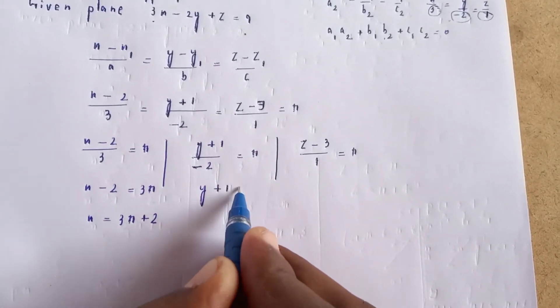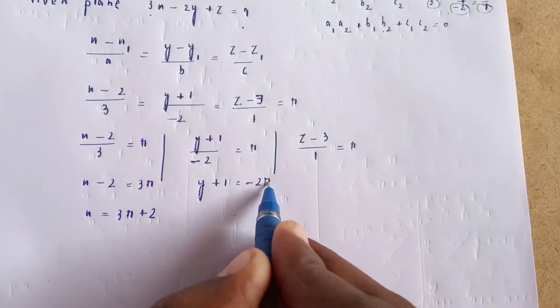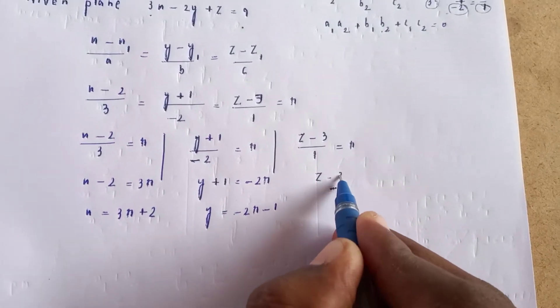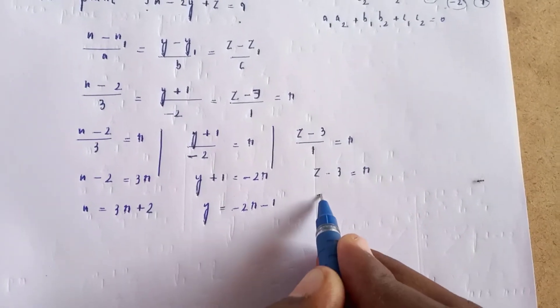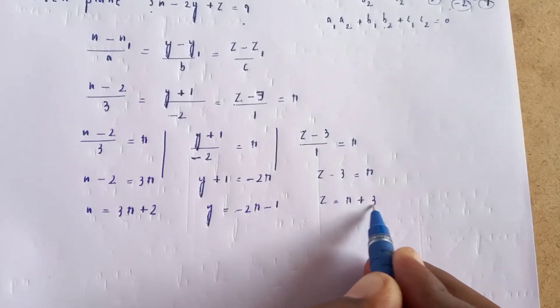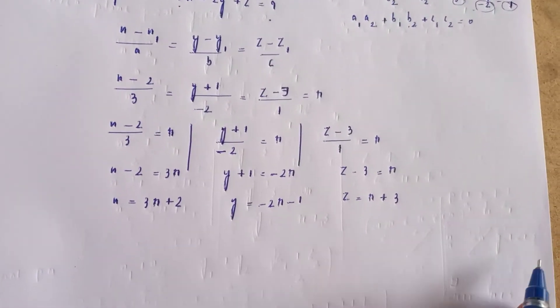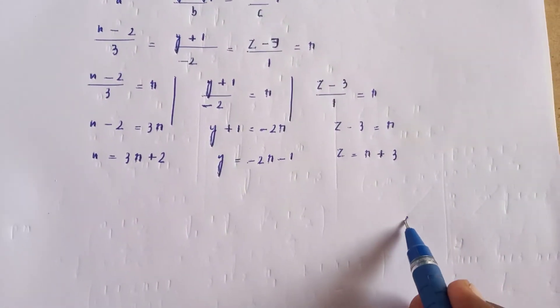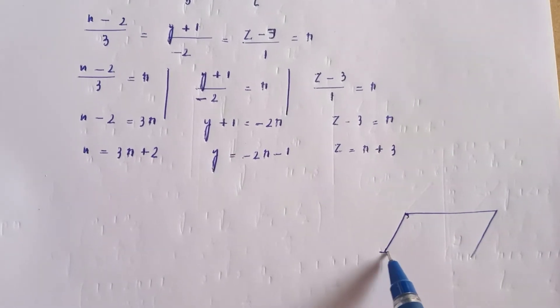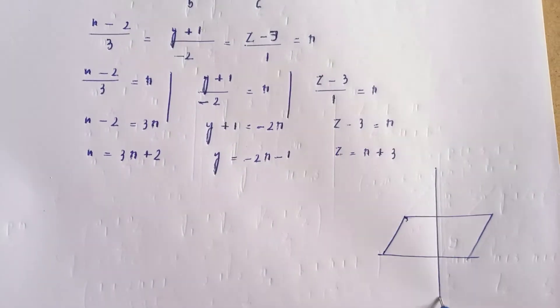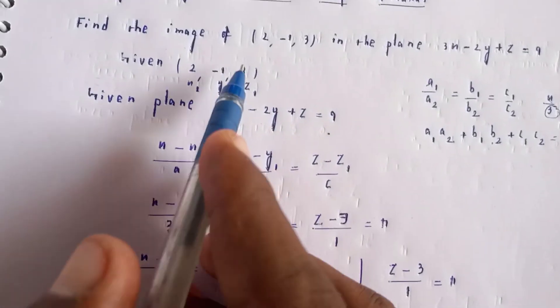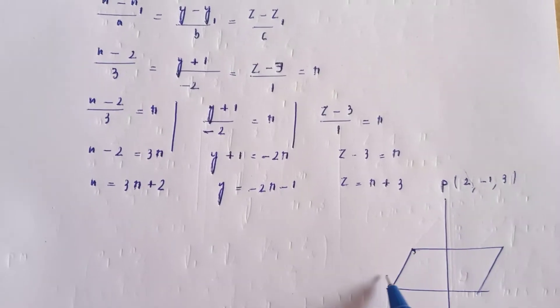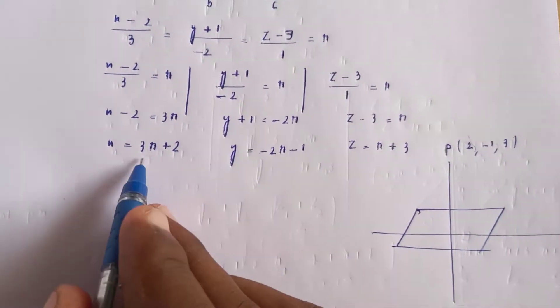Similarly, y + 1 = -2r, so y = -2r - 1. And z - 3 = r, so z = r + 3. Now we have x, y, z in terms of r. The given point is (2, -1, 3) and we need to find its image.